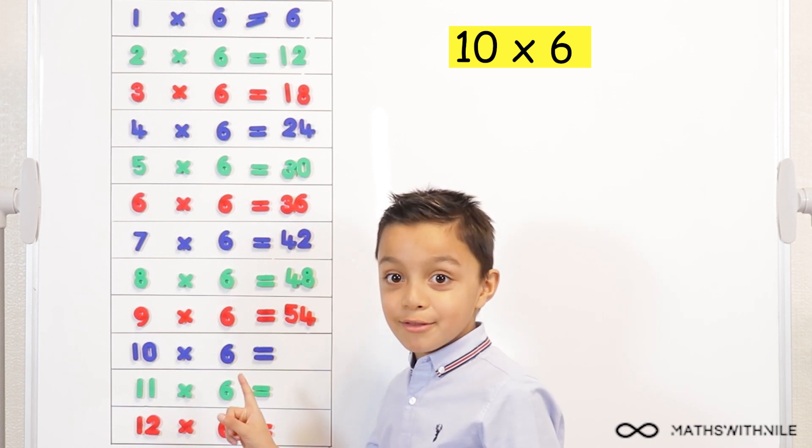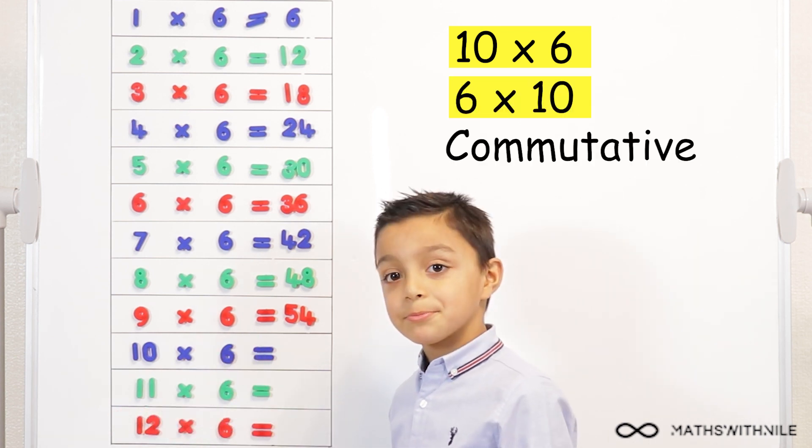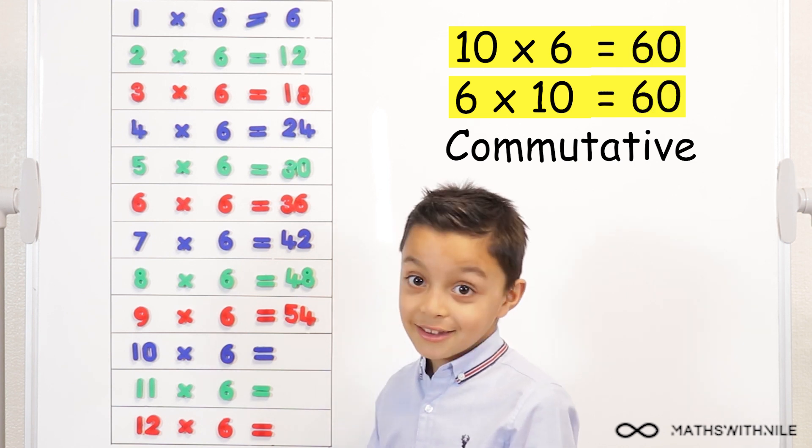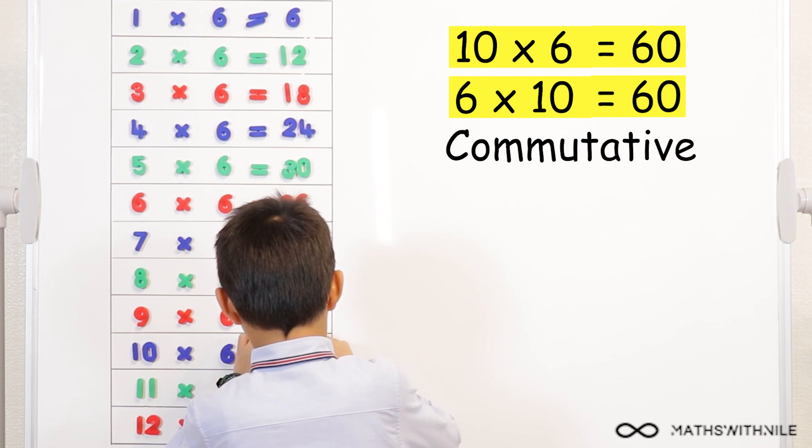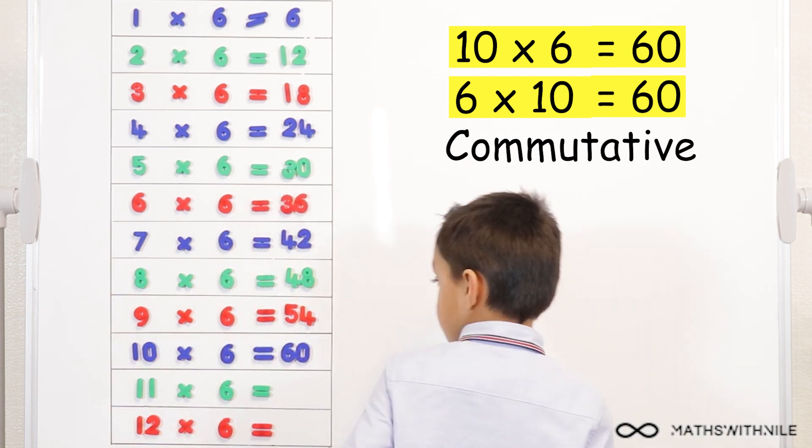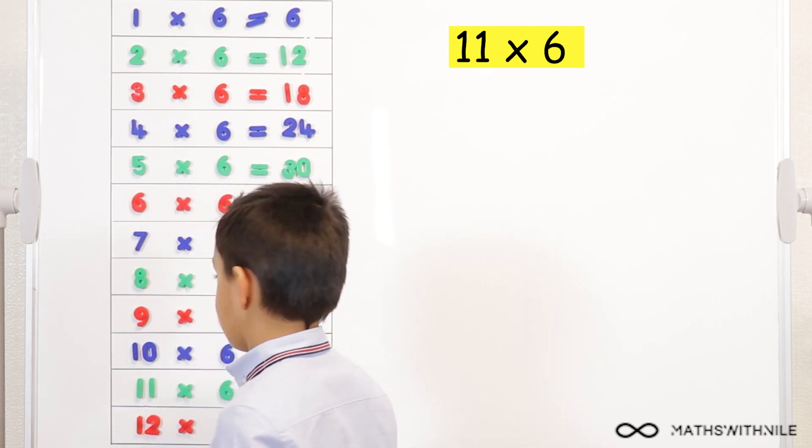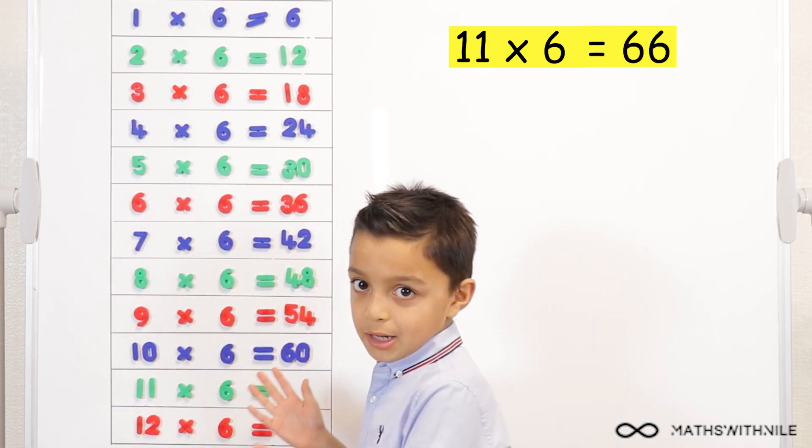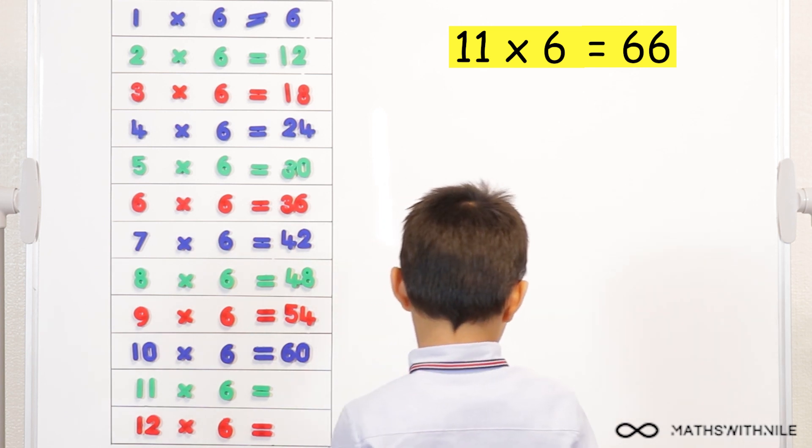Ten times six, this is commutative. Six times ten. It's the same as six times ten, which is? Yeah, so, sixty. Sixty, and I'm going to show you some tricks when we're finished. Well, not tricks, just sensible ways of working out answers. Eleven times six, sixty-six, because if it's sixty. Six more than sixty, sixty-six. Yeah. Good.